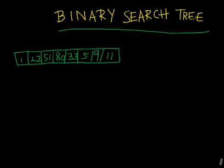Let's see how that works. We have a simple set of integers as shown on the screen, and we'll see how we can build a binary search tree. From the name it is clear that the tree has two children per node — that's the 'binary' part. It's called a 'search tree' because the tree keeps the data in an ordered way, making it easier to search.